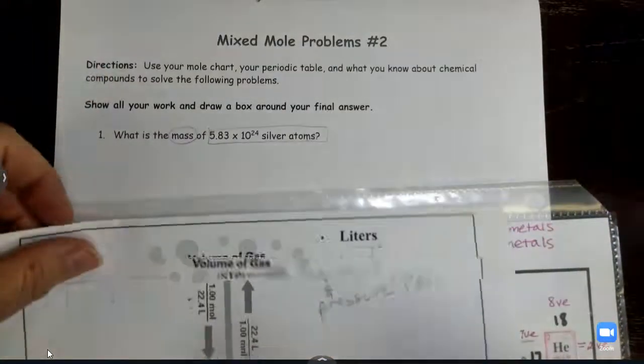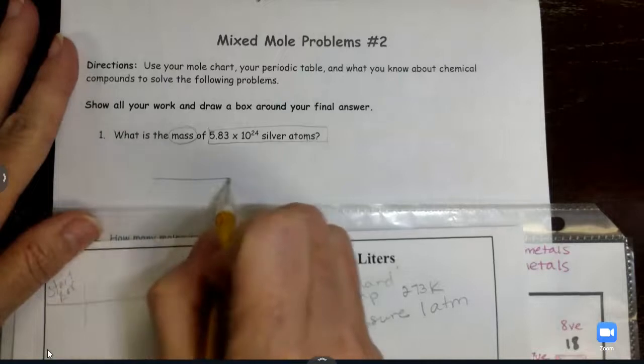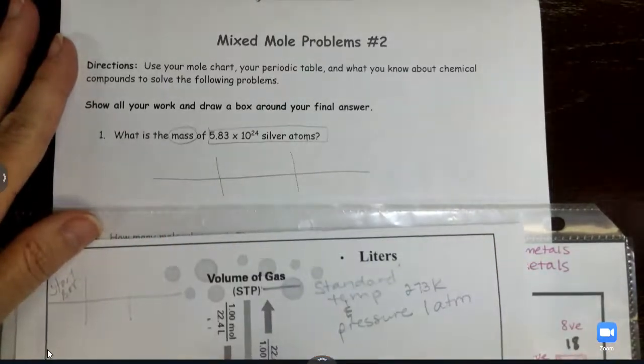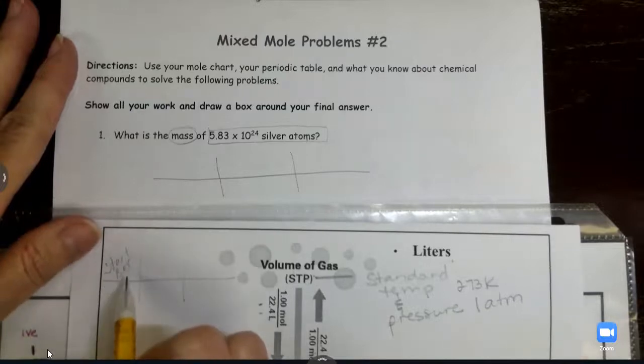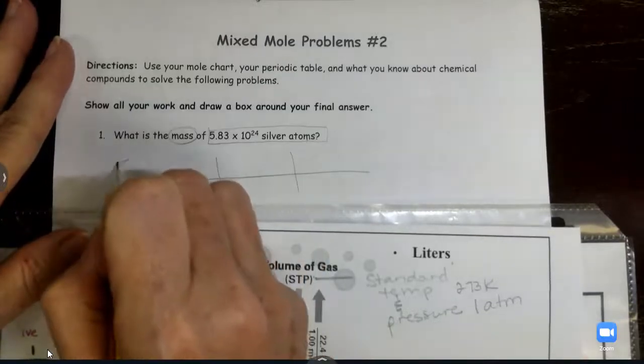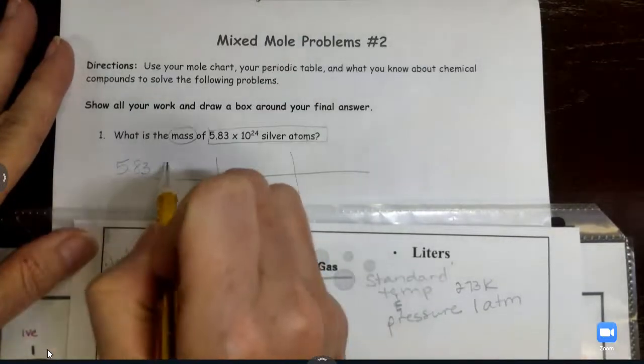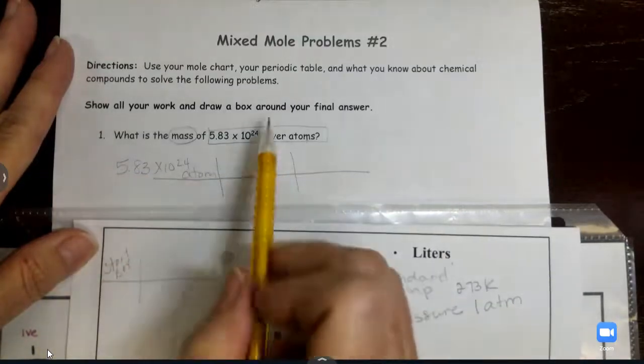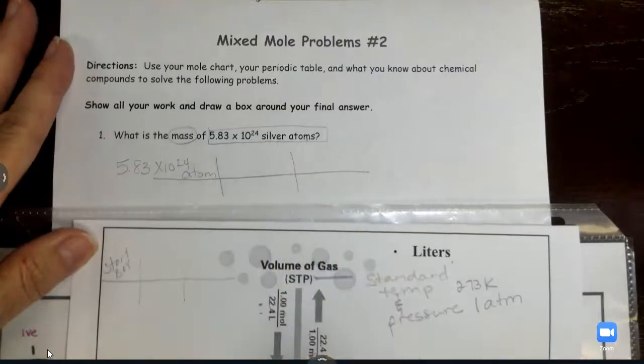So let's set up our train tracks. We're going to have two train tracks. One, two. So again, put what you know in your start box. In my start box, I know 5.83 times 10 to the 24th atoms. Kind of atoms, silver atoms.